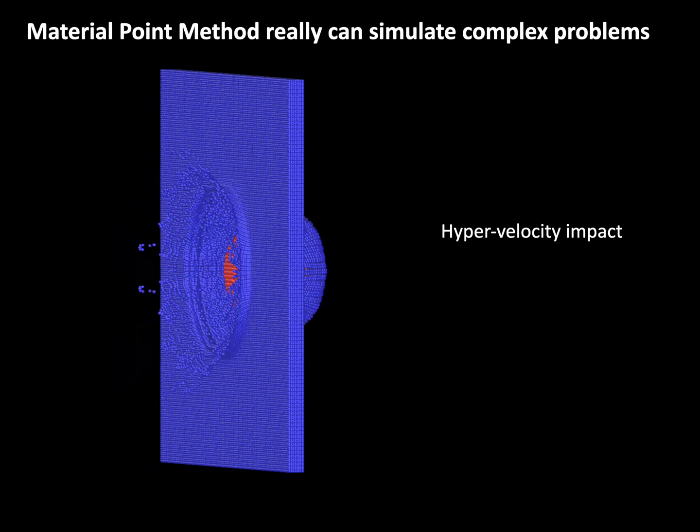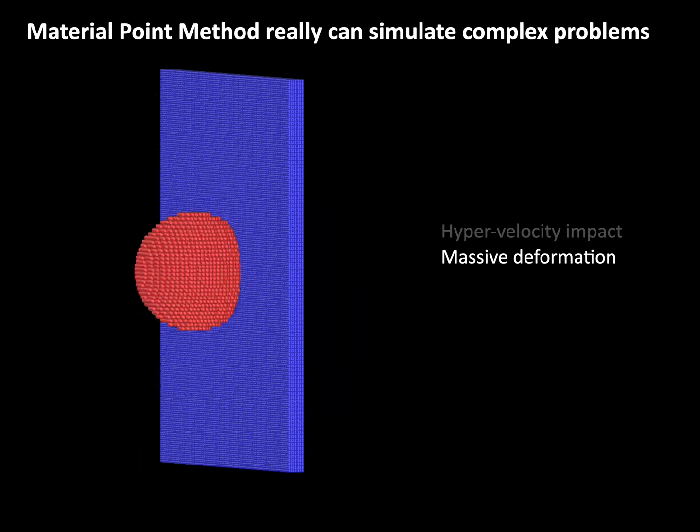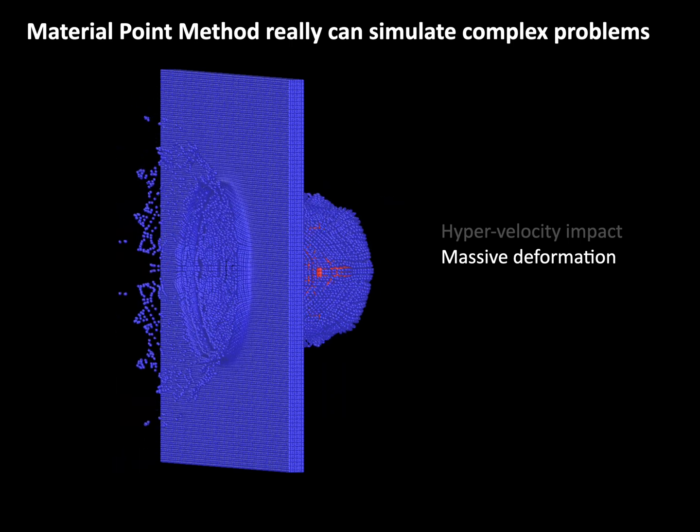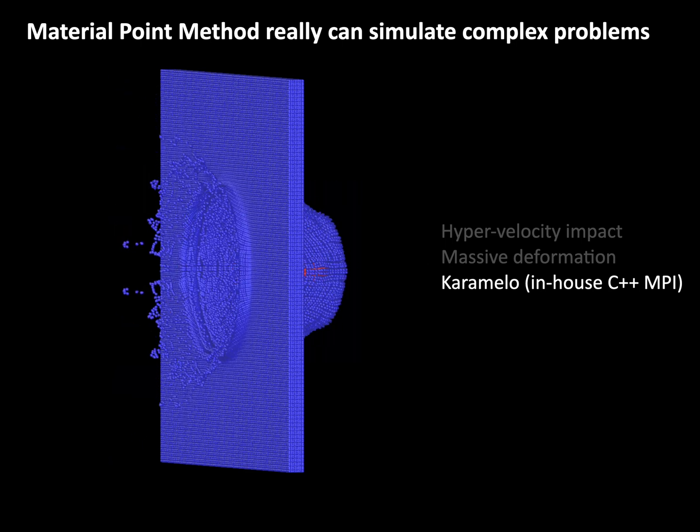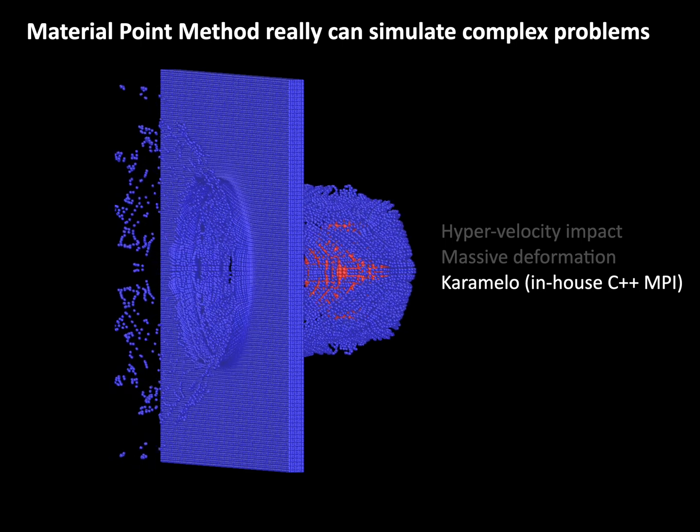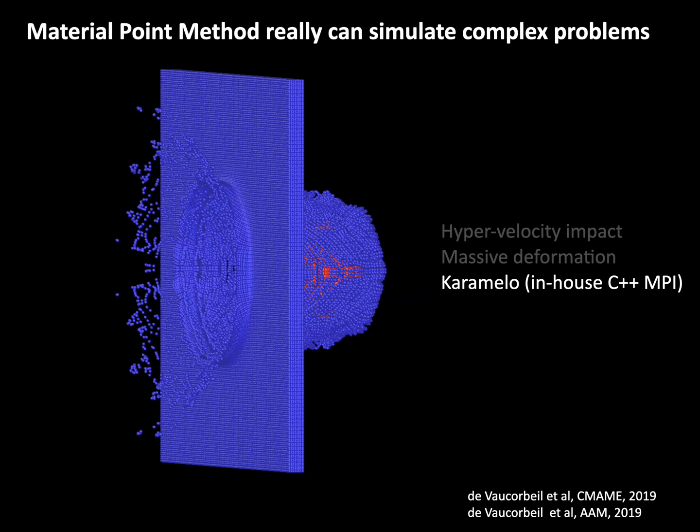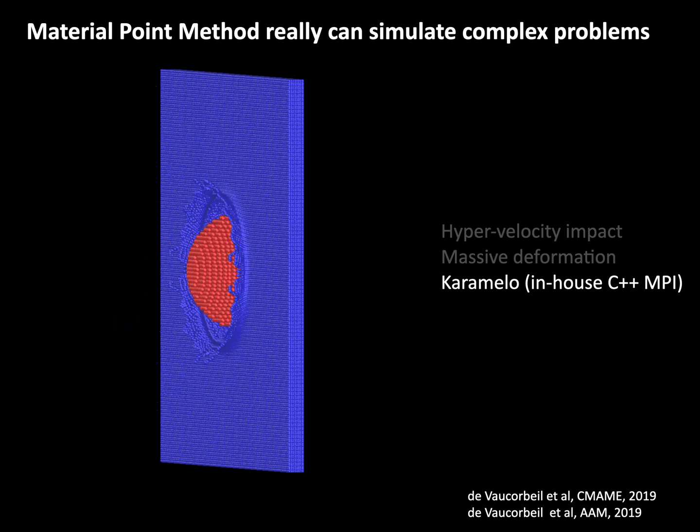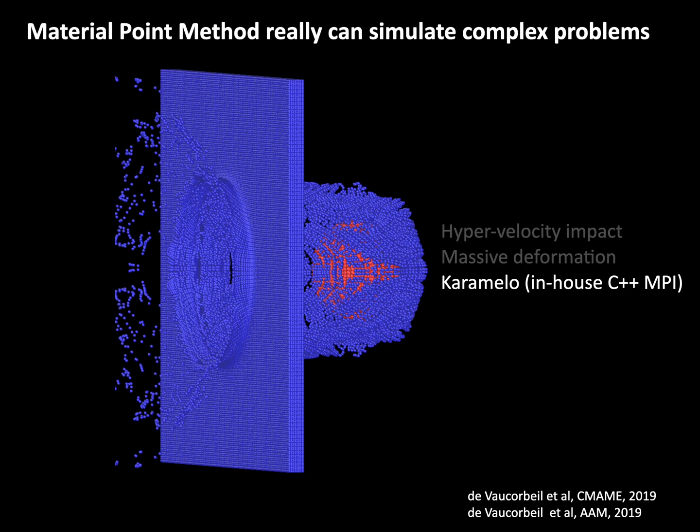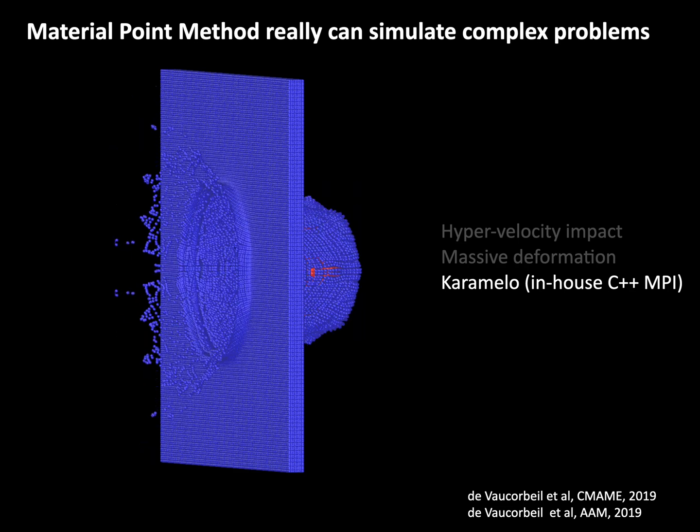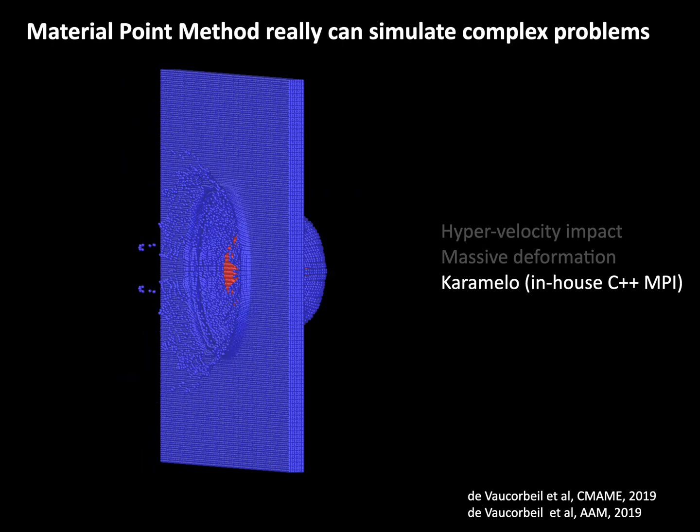I show you a high velocity impact problem. Here you have a spherical sphere impacting a steel plate. High velocity impact. It involves massive deformation. And the simulation runs well with the MPM. This is done by Caramelo. This is an in-house C++ code written by Alban de Vaucorbeil. So, to conclude the part on the MPM. This is a simple method that can handle massive deformation.